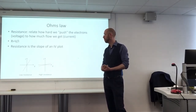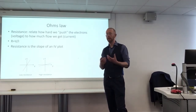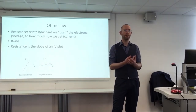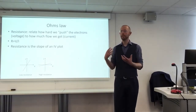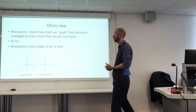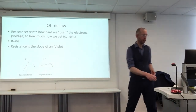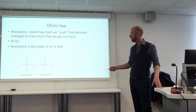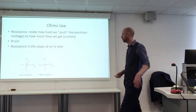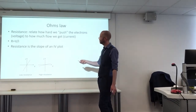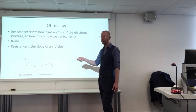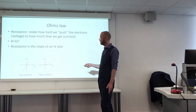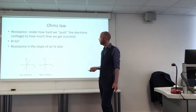Ohm's law was just derived from observations — from someone observing that when we apply a voltage to a circuit, we get a current, and most of the time it's linear. We get a straight line on a graph if we plot voltage against current. As long as we get this straight line, we know Ohm's law holds. We call this an Ohmic resistor — we get a straight line on an IV plot.